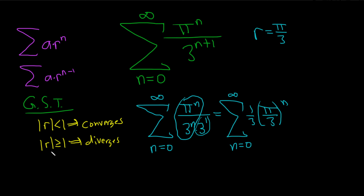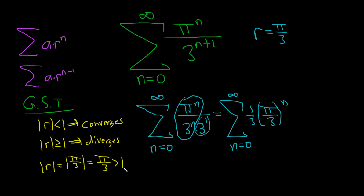So here we have to figure out what the absolute value of our r is. The absolute value of r is just the absolute value of pi over 3, which is just pi over 3. We don't even need a calculator — pi is a little bit bigger than 3, that's like 3.1459, et cetera, so this fraction is bigger than 1. Therefore this series diverges.